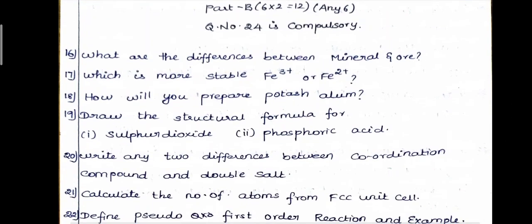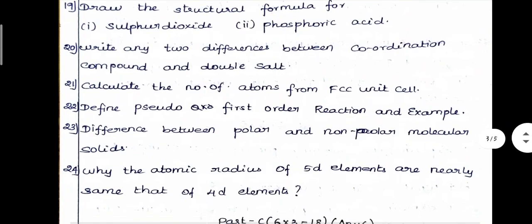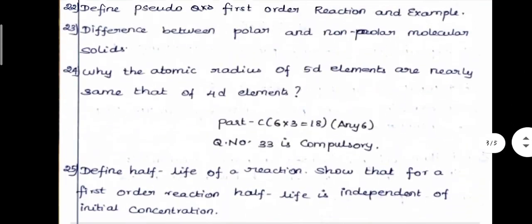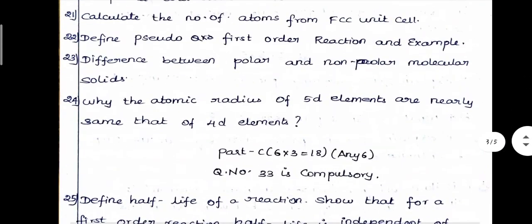Now the compulsory answer: why are the atomic radii of 5d orbital elements nearly the same as those of 4d elements? It is due to lanthanide contraction — the poor shielding effect causes lanthanide contraction, making the two radii nearly the same. So this is the answer.